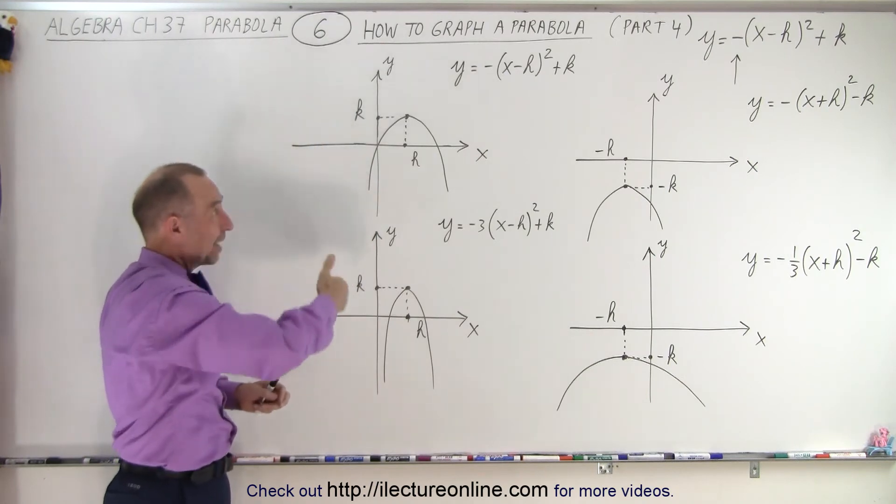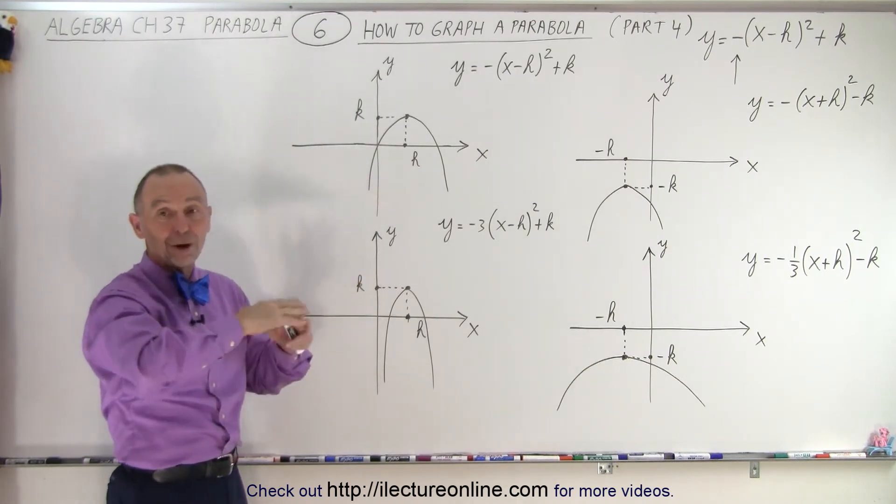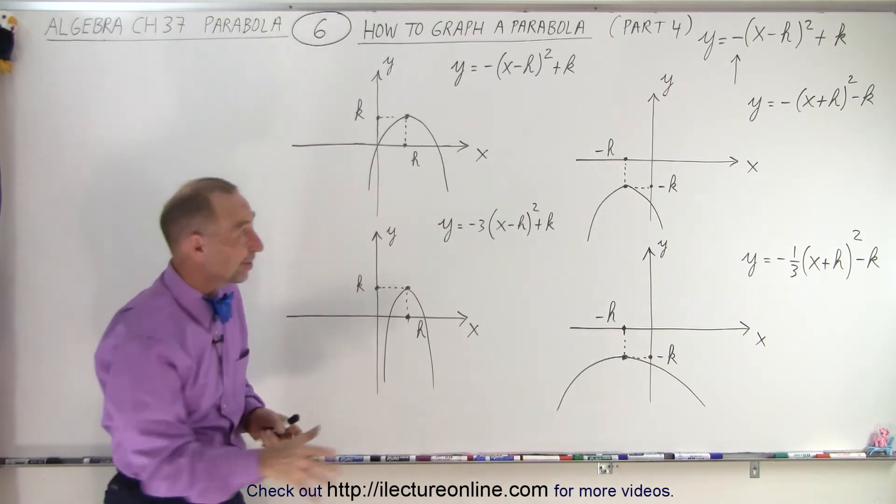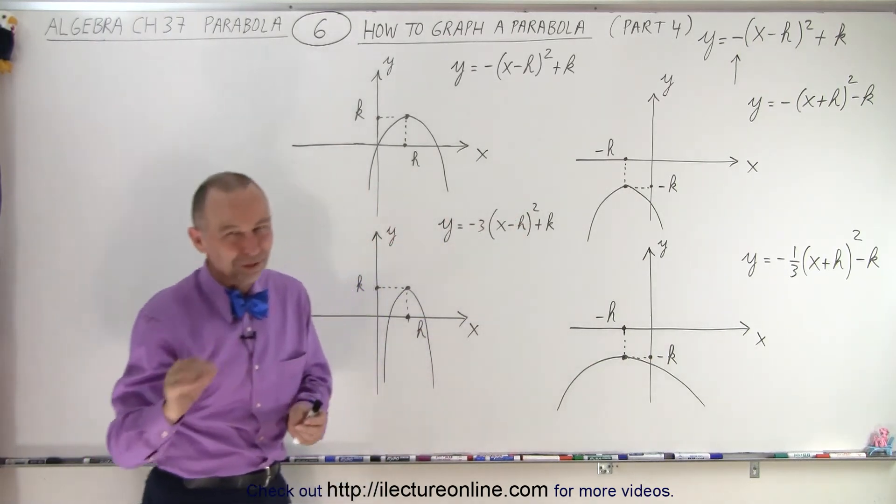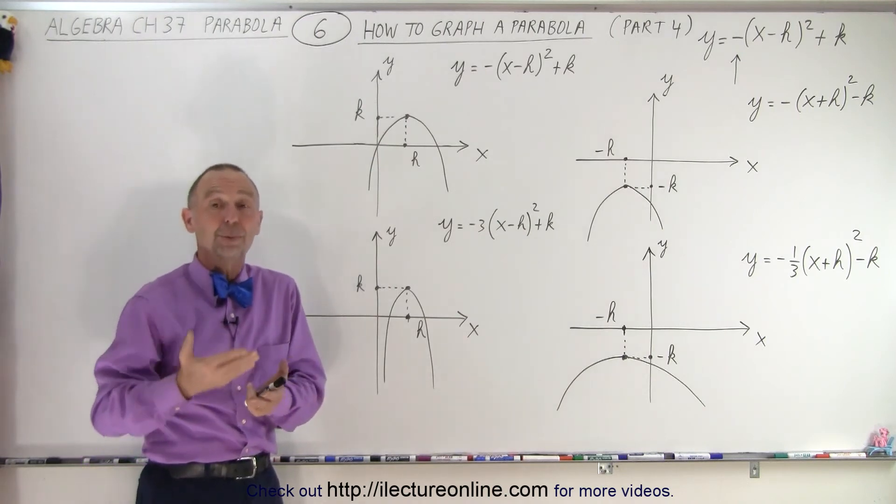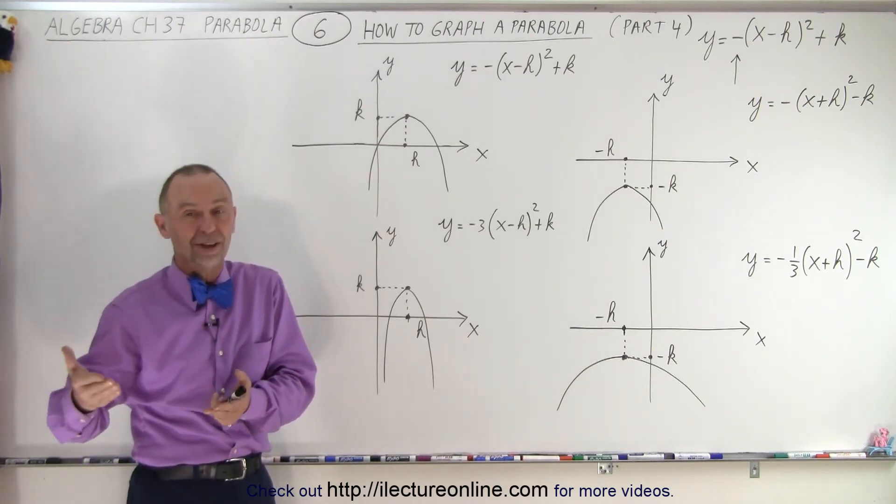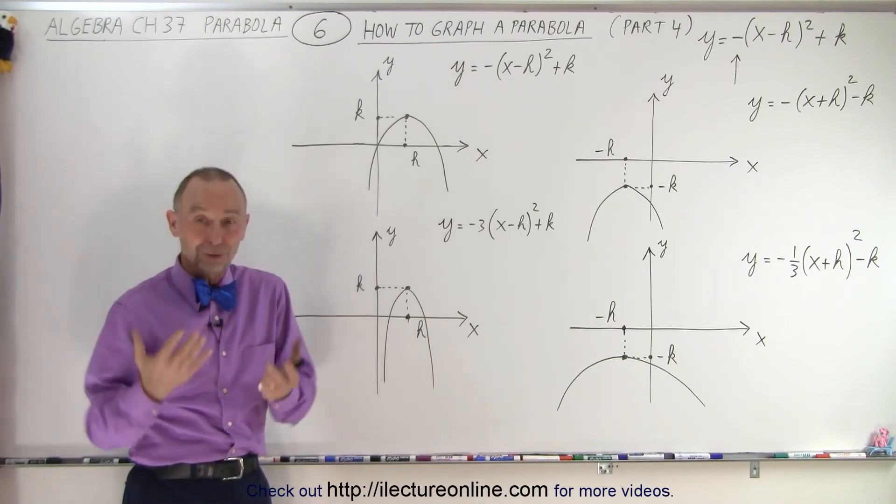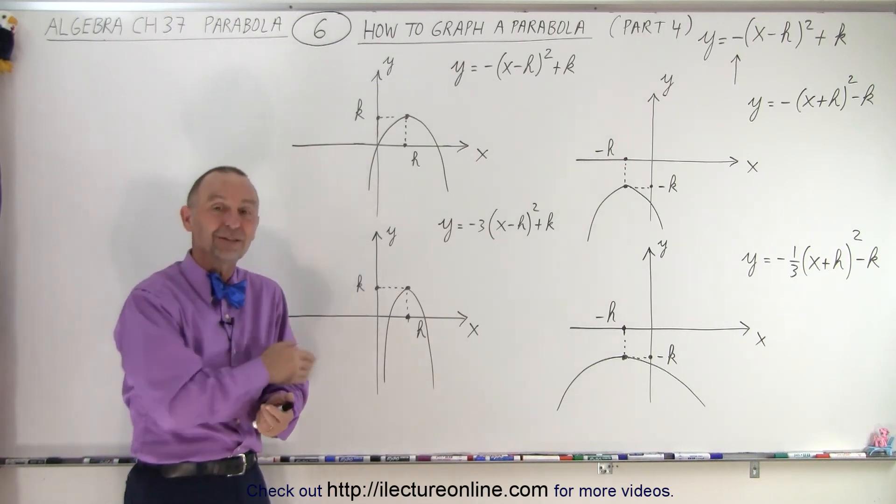And it opens upward or downward simply by looking at the equation and just graphing it. So it's actually easier in this form. It's a little bit more difficult when it's in the general form, Y equals AX² plus BX plus C. But that comes later again. We'll show everybody how to do the graphing of the parabola in those cases as well.